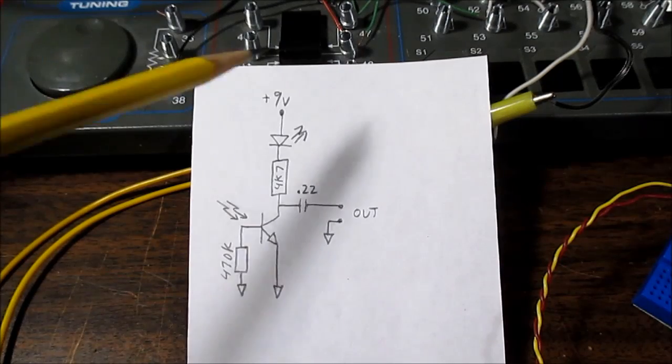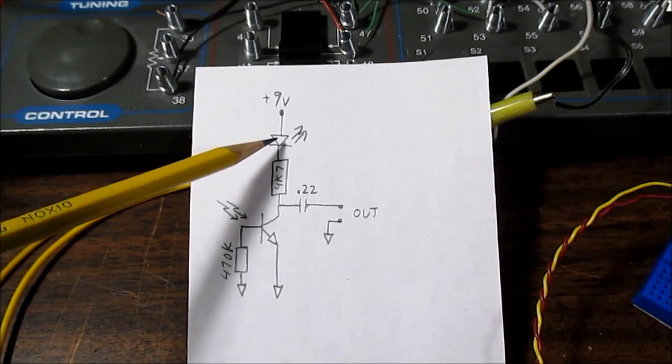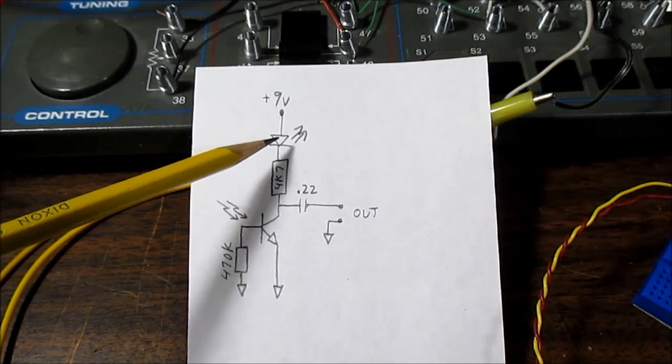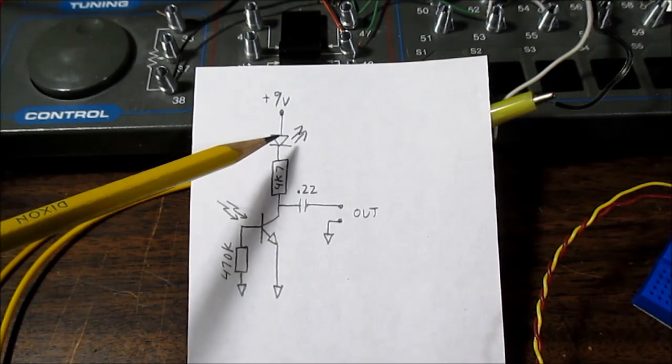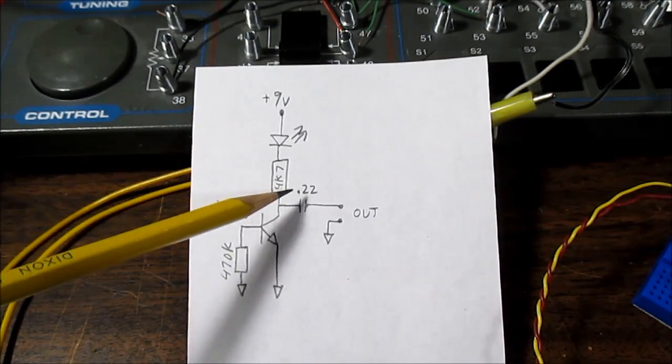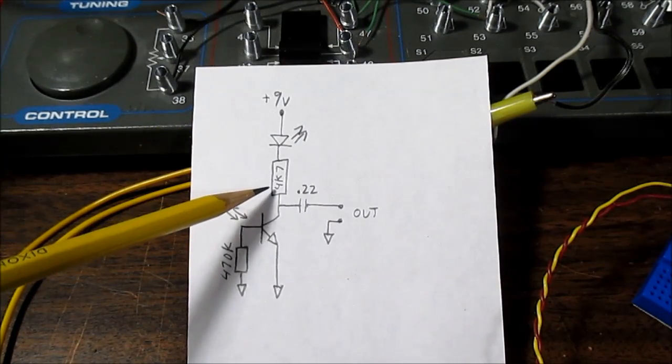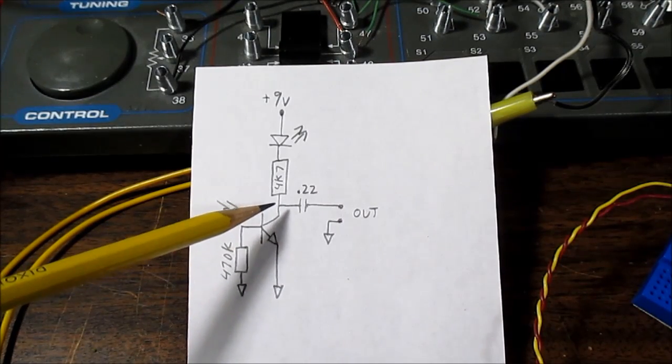And here is a schematic of the circuit. I have 9 volt supply here going through an LED. I really don't need the LED, but it's kind of a visual indication of how much current is flowing. The brighter the LED, the more current is passing through the transistor. I have a 4.7K resistor that will help limit current.